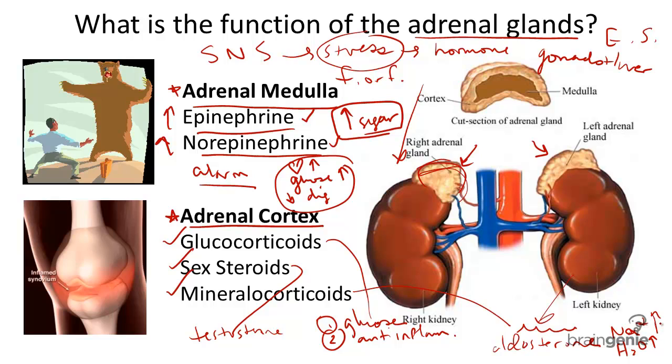Overall, the adrenal glands are critical to many different parts of the body. Luckily, we have two — just in case.